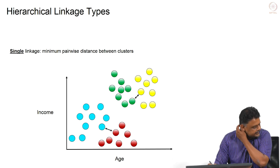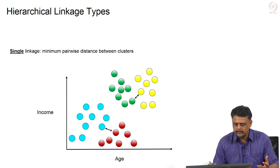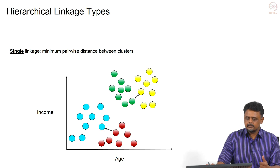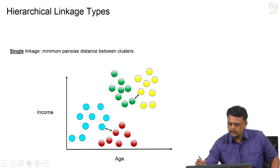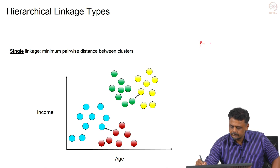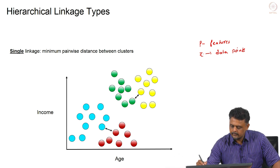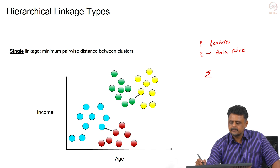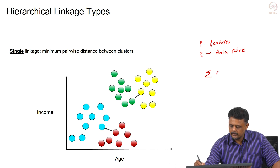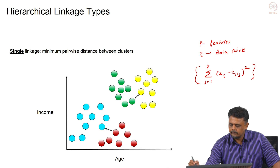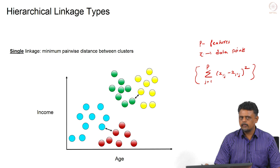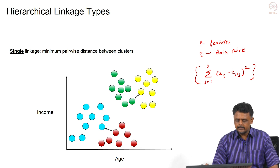Now let us look at how the dissimilarity metric is calculated. Basically it is the Euclidean distance between points. If we have p features, and xi denotes data points, then for any two data points i and i-prime, the Euclidean distance is the square root of the sum over j from 1 to p of (x_ij minus x_{i'j}) squared. This metric is calculated between any two pairs of data points we want to merge. When merging clusters, that is when the linkage becomes more important.